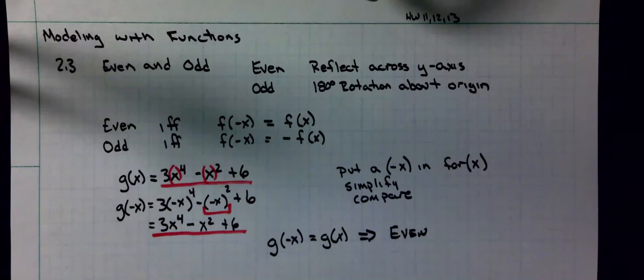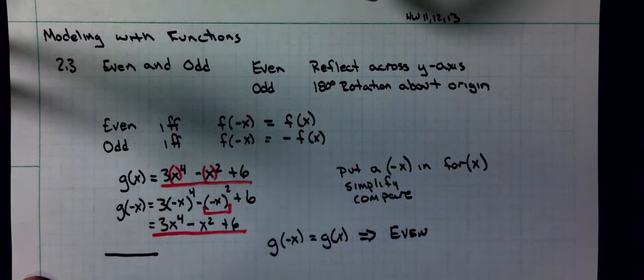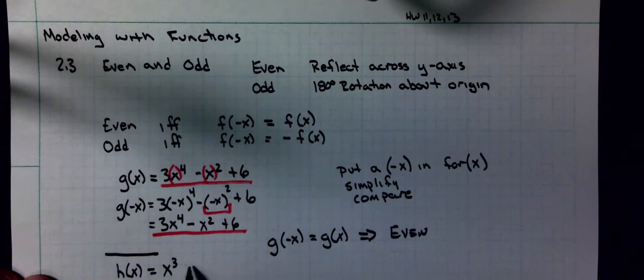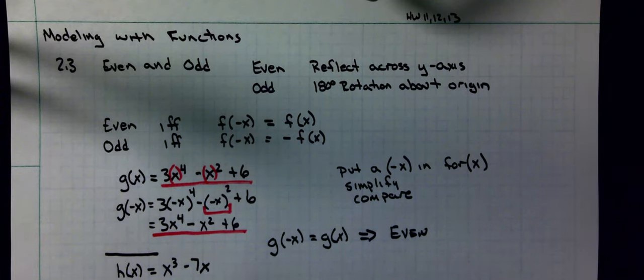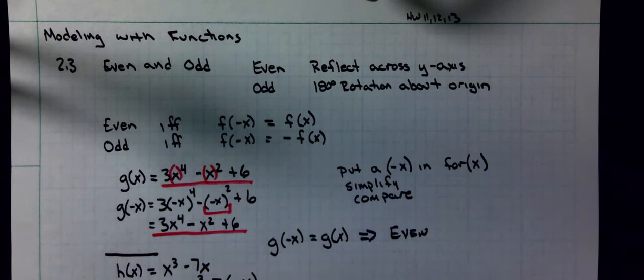I'll show you an example of one that is odd. He's giving you h(x) = x^3 - 7x. I need to figure out what h of negative x is. Well, h(-x) is copy the original function where there's an x, put parentheses. Inside the parentheses put the negative x. A negative to an odd power is a negative, so this would end up being -x^3. Then a -7 times a -x is a positive 7x.